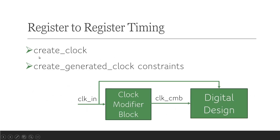Now I will discuss where to use create clock and where to use create generated clock constraints. In a given digital design, the clock input goes to a clock modifier block — for example a PLL, DLL, clock manager, clock divider, or clock multiplier — let's call it CMB. At the input port where the clock input arrives, we must define create clock. At the output of the clock modifier block we should define create generated clock, though exceptions exist where create clock may be used at the CMB output instead.